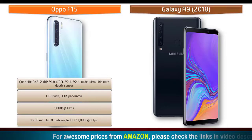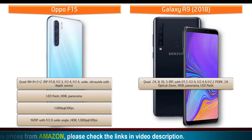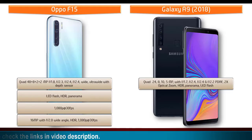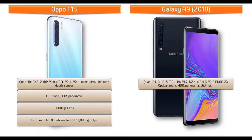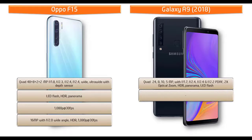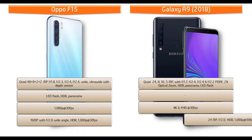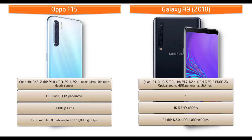Galaxy A9 features the world's first quad smartphone camera to capture life the way it was meant to be seen. Its intelligent camera system gives four times the functionality for any occasion. It comes with quad 24, 8, 10, and 5 megapixels primary cameras with f/1.7, f/2.4, f/2.4, and f/2.2 apertures — ultra-wide, telephoto, main, and depth cameras — plus PDAF, 2x optical zoom, panorama, HDR, and LED flash. It shoots 4K and Full HD video at 30 fps. Galaxy A9 also has a 24-megapixel front camera with f/2.0 aperture, HDR, and 1080p recording at 30 fps.